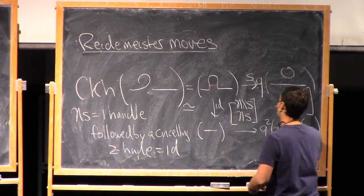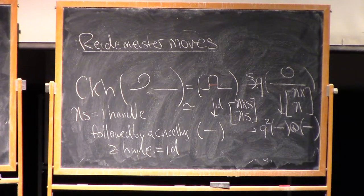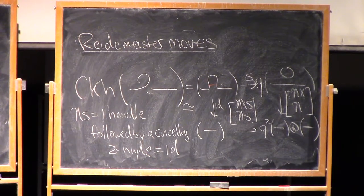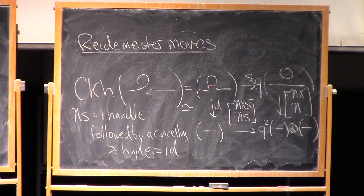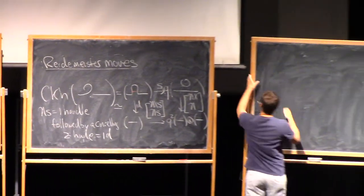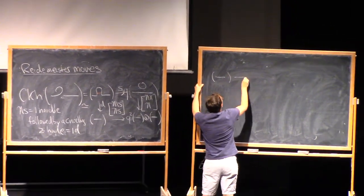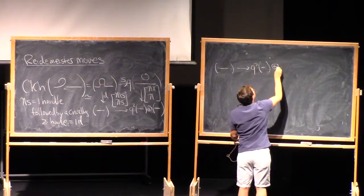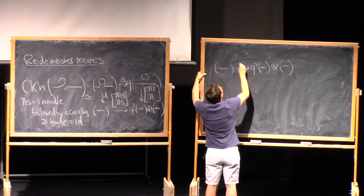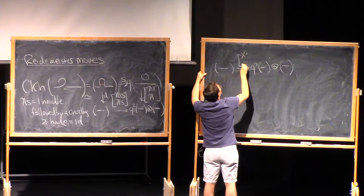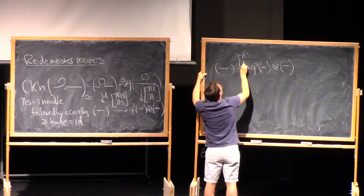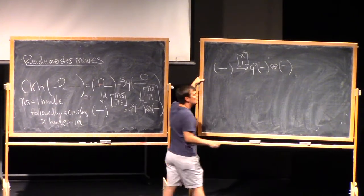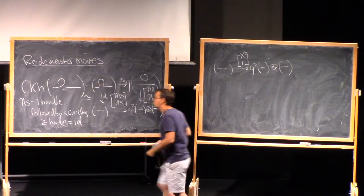So another way that I could write this complex is that it's isomorphic to this one object here. It goes to q squared times this plus this. And here the map is multiplication by x, that's adding a dot, and the identity. All right, so now we're almost done, but we need a really important lemma.